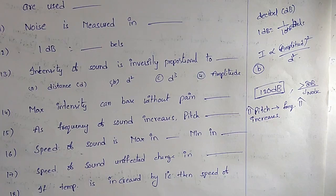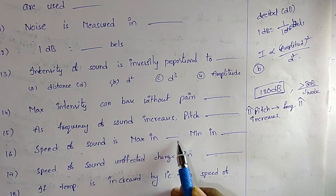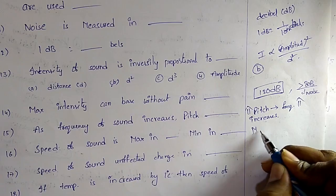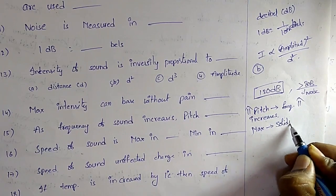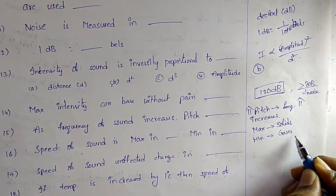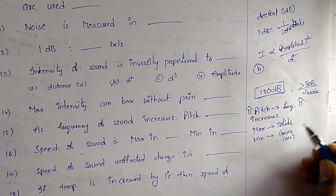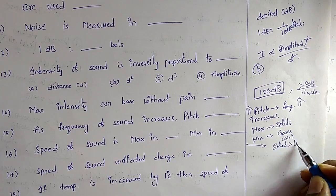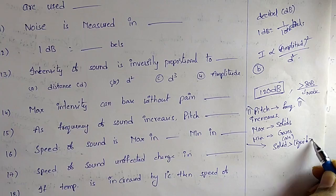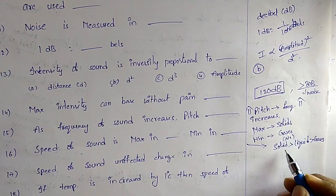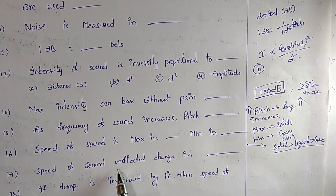Question 16: Speed of sound is maximum in solids and minimum in gases. The order is: solid > liquid > gases. For example, in air the speed of sound is lowest among the three states of matter.